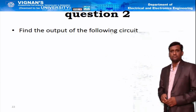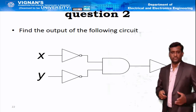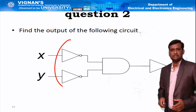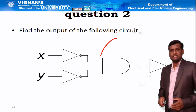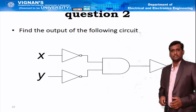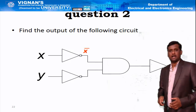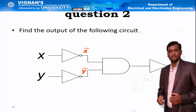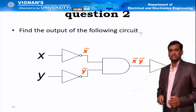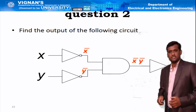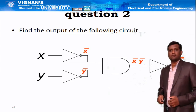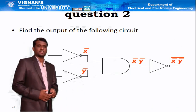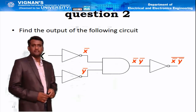Next question: find the output of the following circuit. X and Y are the inputs, and these two gates are NOT gates, this gate is AND gate, and this gate is again NOT gate. If X is the input to the first NOT gate, its output is X̄. Similarly, if Y is the input to the second NOT gate, its output is Ȳ. These two are the inputs to the AND gate, so its output is X̄·Ȳ. This X̄·Ȳ is then the input to the final NOT gate, thereby its output is X̄·Ȳ̄ (whole bar). That is the output from the combined circuit.